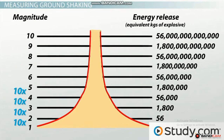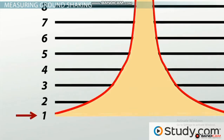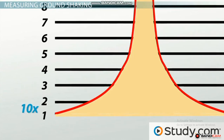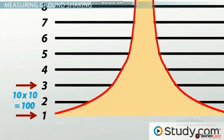Let's look at an example. Say we have a magnitude one earthquake on the Richter Scale, which is the lowest magnitude earthquake. Compare that with a magnitude two earthquake, which is only one step higher — remember the scale runs from one to ten — and you now have ten times more ground shaking than with the magnitude one quake. Take another step up the scale, from magnitude one to magnitude three, and this is ten times more than that first step, so we now have a hundred times more ground shaking with just two steps up the scale.